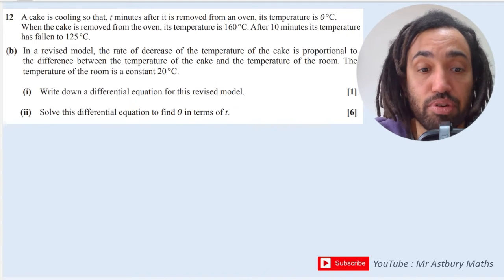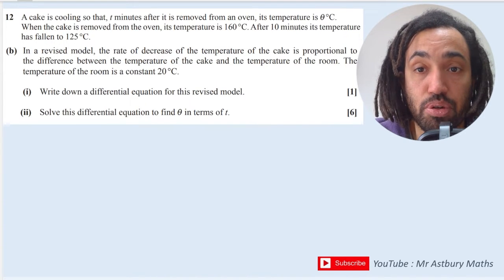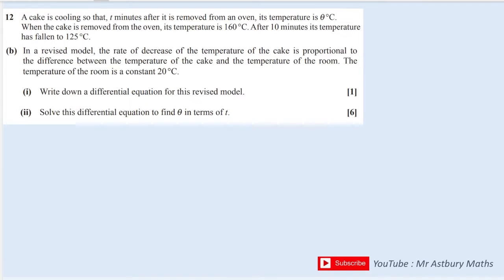A cake is cooling so that t minutes after it is removed from an oven, its temperature is theta. When the cake is removed from the oven—so this will be when t equals zero, because initially its temperature is 160—and then after 10 minutes its temperature has fallen to 125.